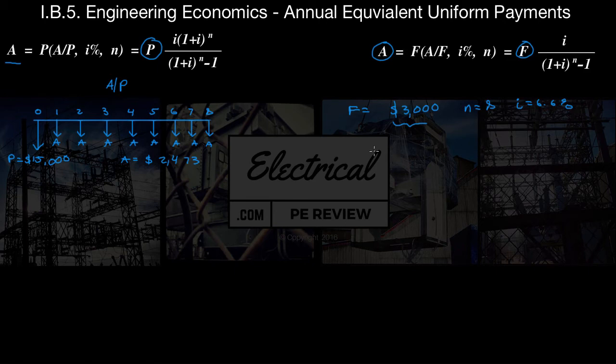So we can say that we want to find A given our F of $3,000 times A given F at an interest rate of 6.6% for a period of 8 years, which is going to be the same as our interest as a decimal, 0.066, divided by 1 plus our interest, 0.066, to an exponent of 8 minus 1. Of course, we're just getting that from right here.